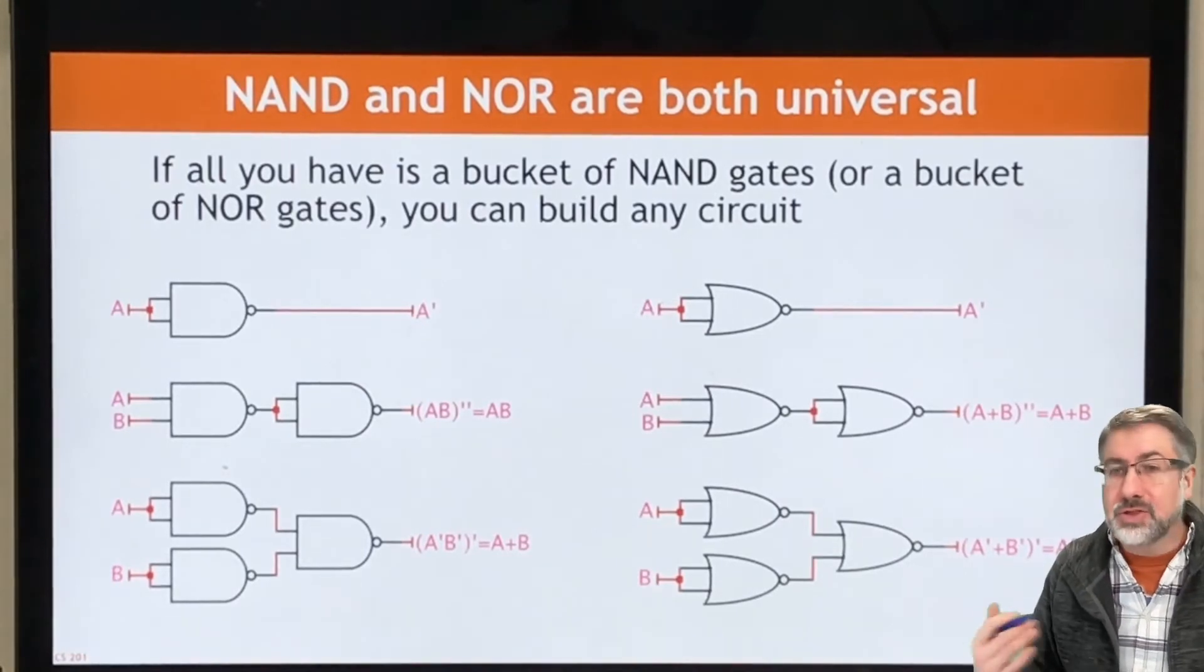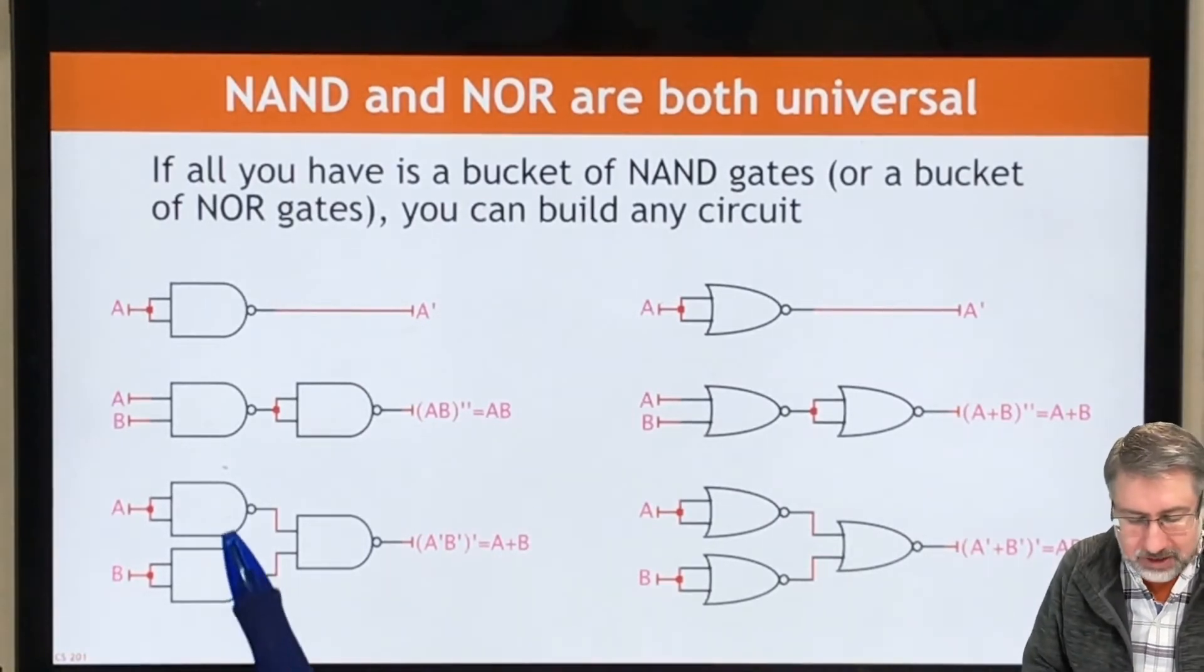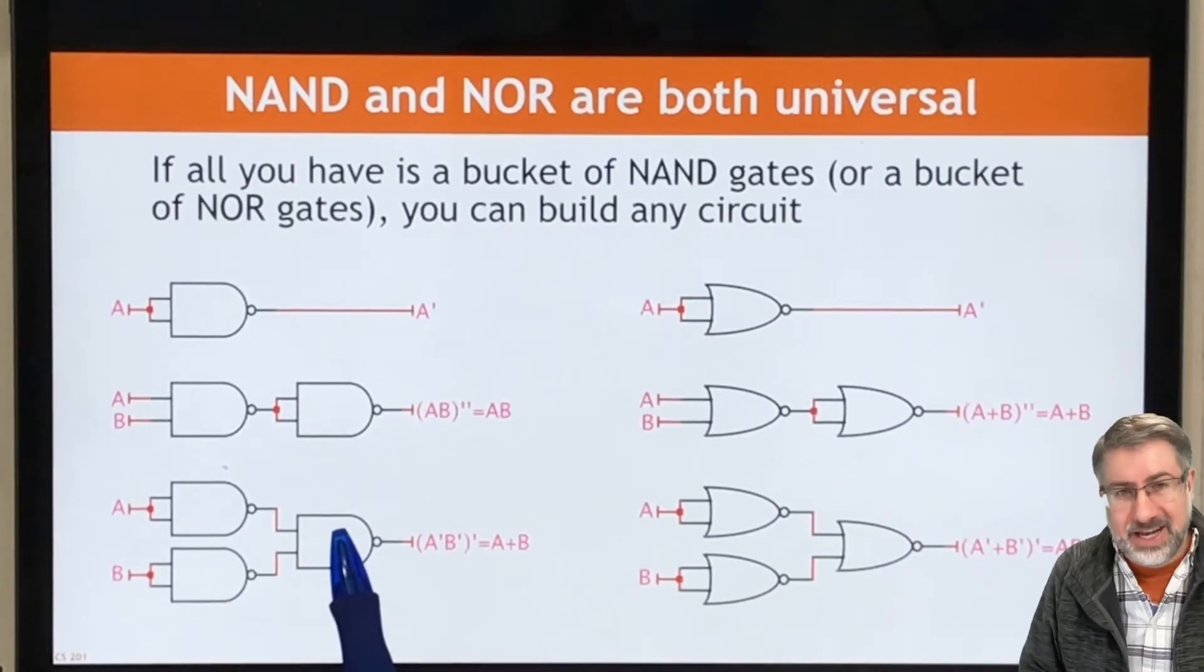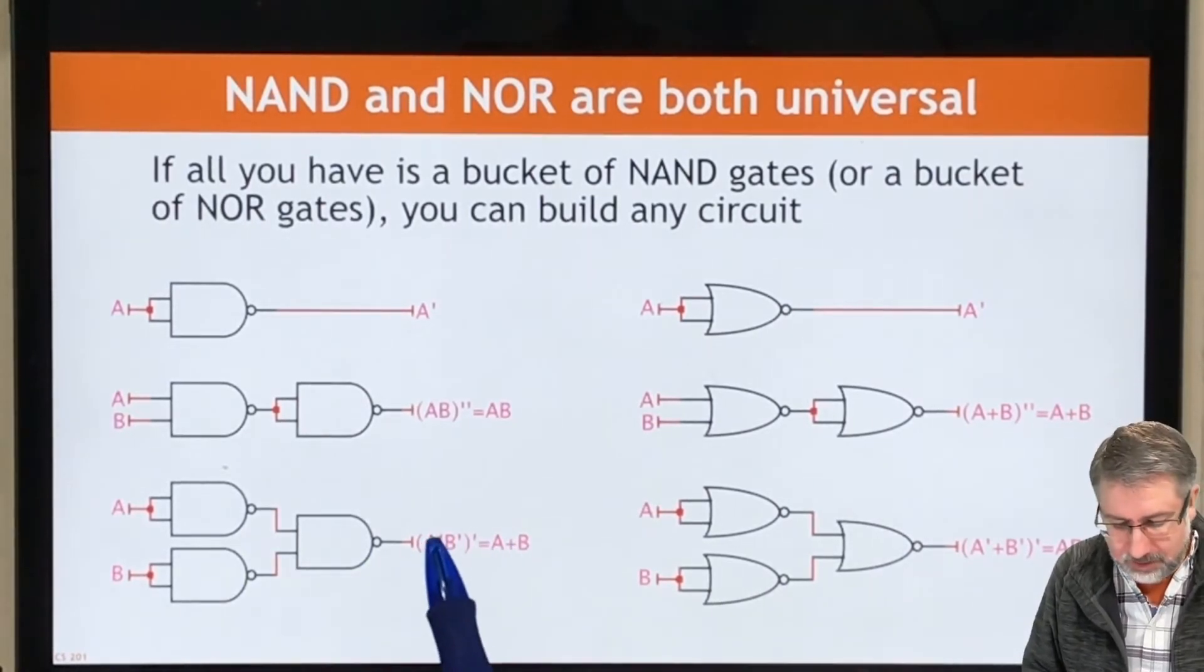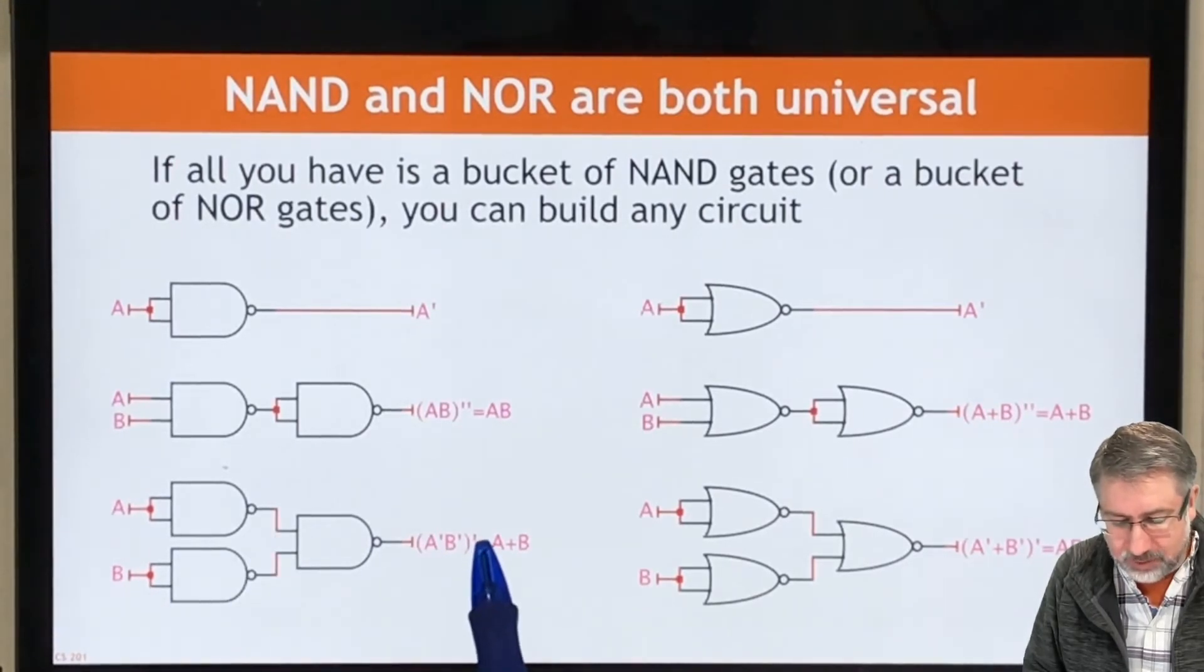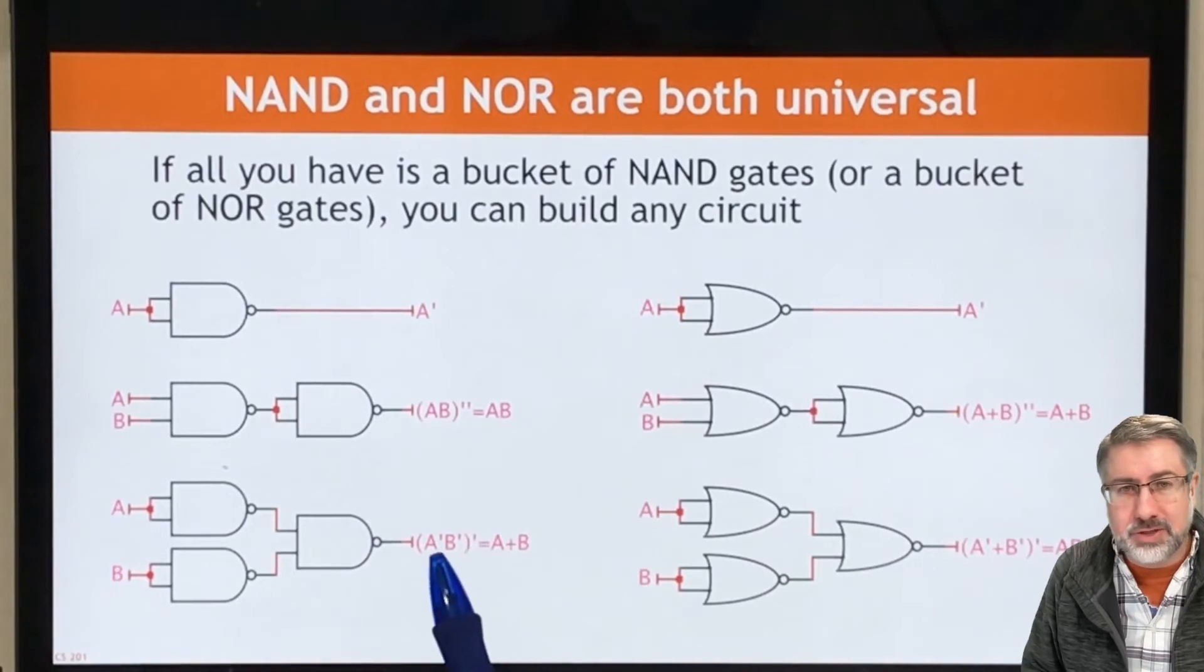Finally, we can use DeMorgan to show that if we invert the inputs of a NAND gate, what we get is OR. And we can see this, right—A bar, B bar, we invert and invert, and then invert the ANDed result. We can bring this inversion down into here, cancels those two out, and we get OR.